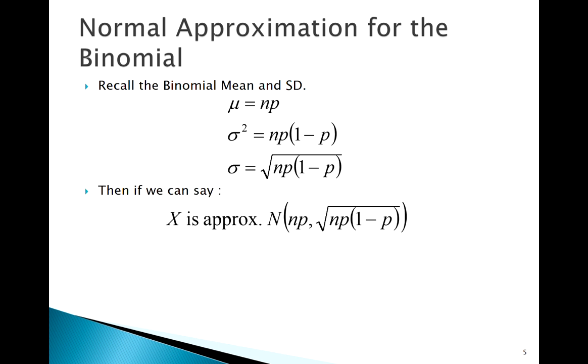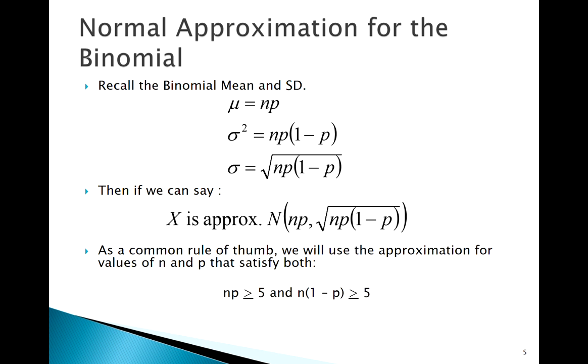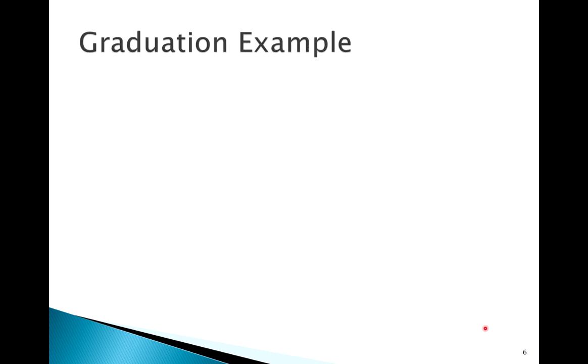So if we can meet certain conditions, those conditions specifically being that n times p greater than some number, say 5, some books use 10, then we can assume that we can use this approximation, that x can be approximately normal with a mean of n times p, that's our binomial mean, and this standard deviation. So how do we apply that?